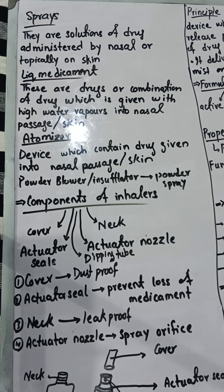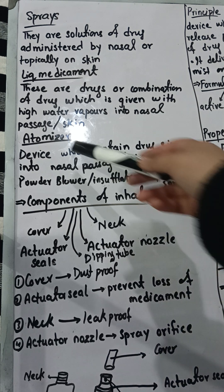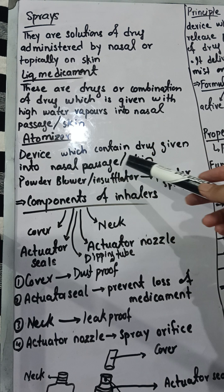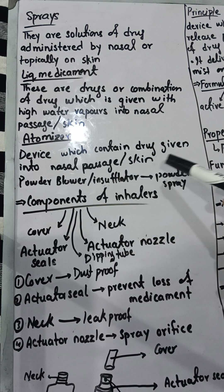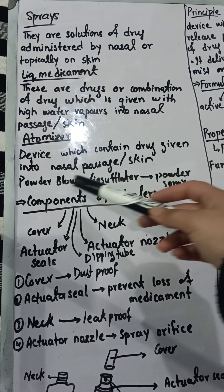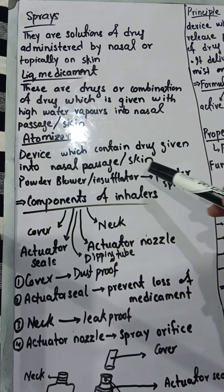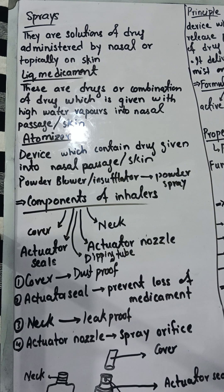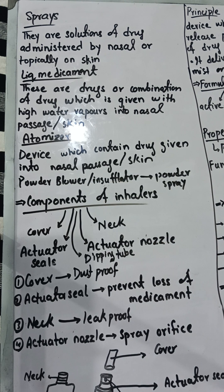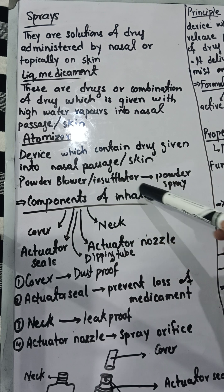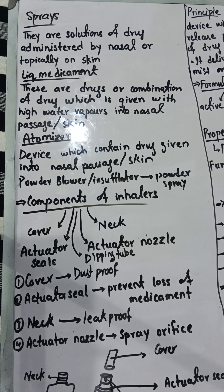The device which is used for sprays is called an atomizer. The atomizer is the device which delivers the drug into the nasal passage or over the skin. Powder bowlers and encephalators contain powders in the form of sprays — they contain powders.